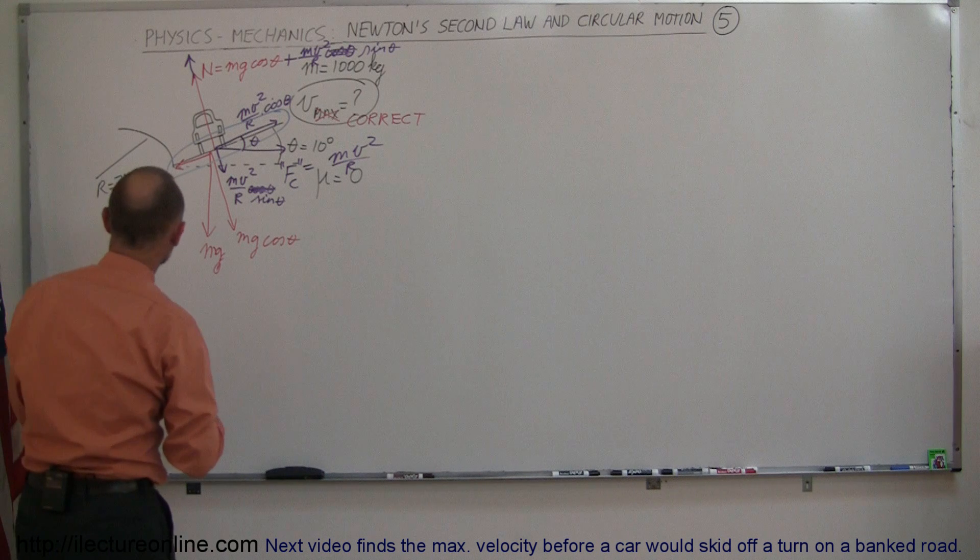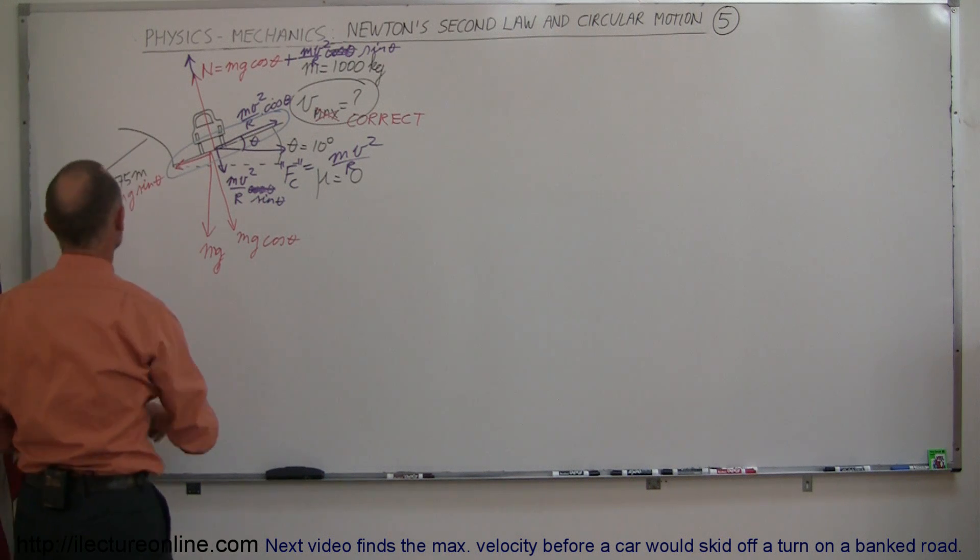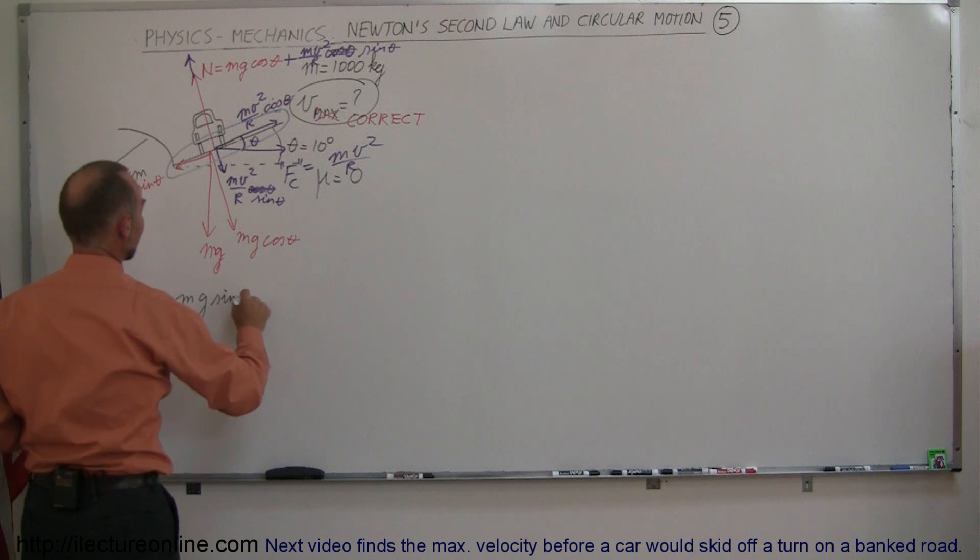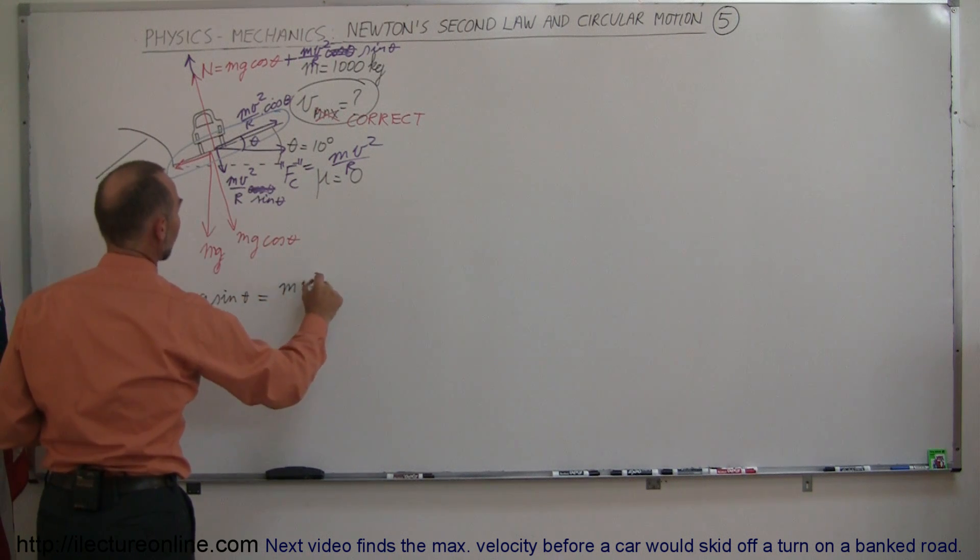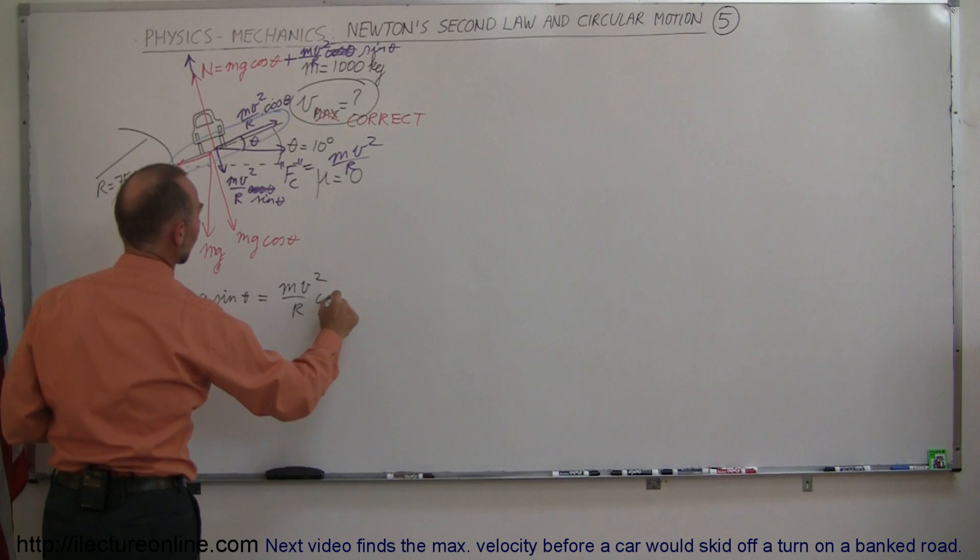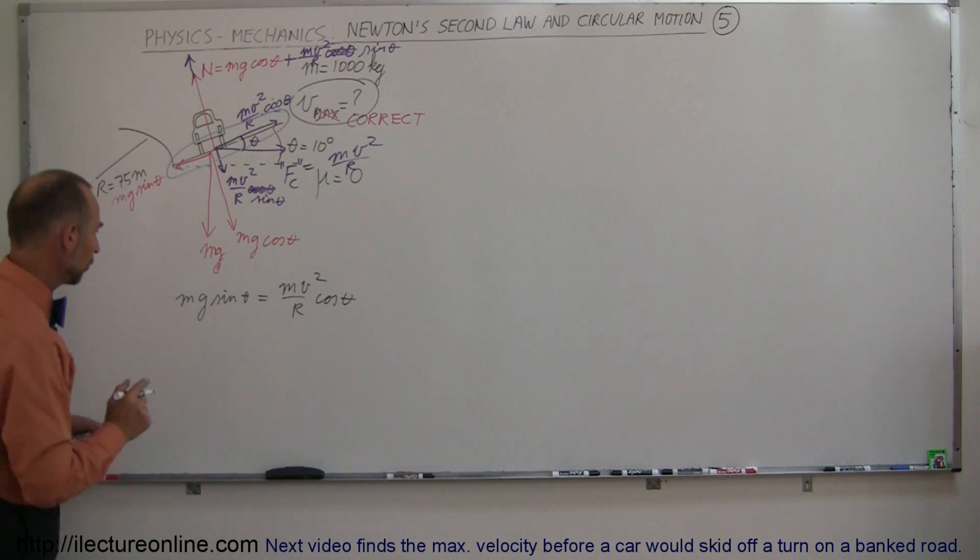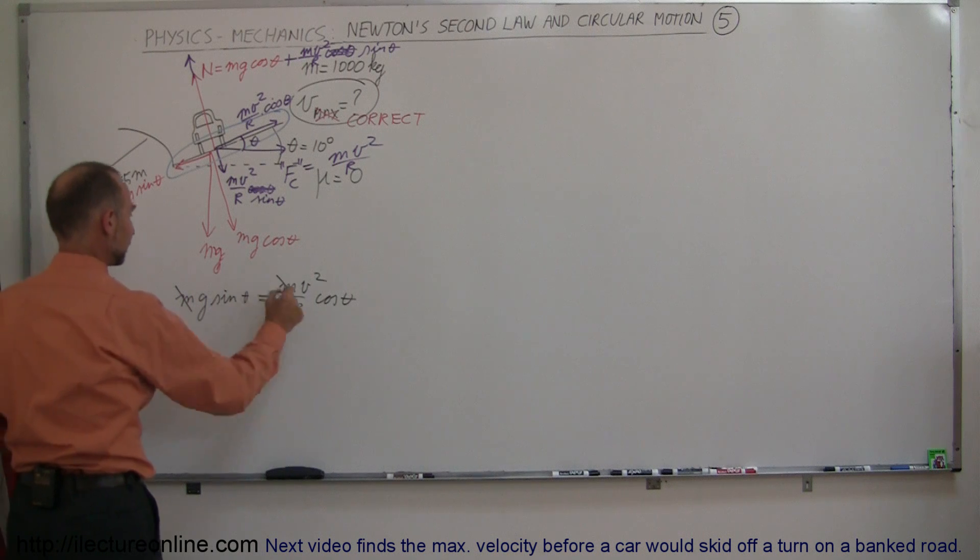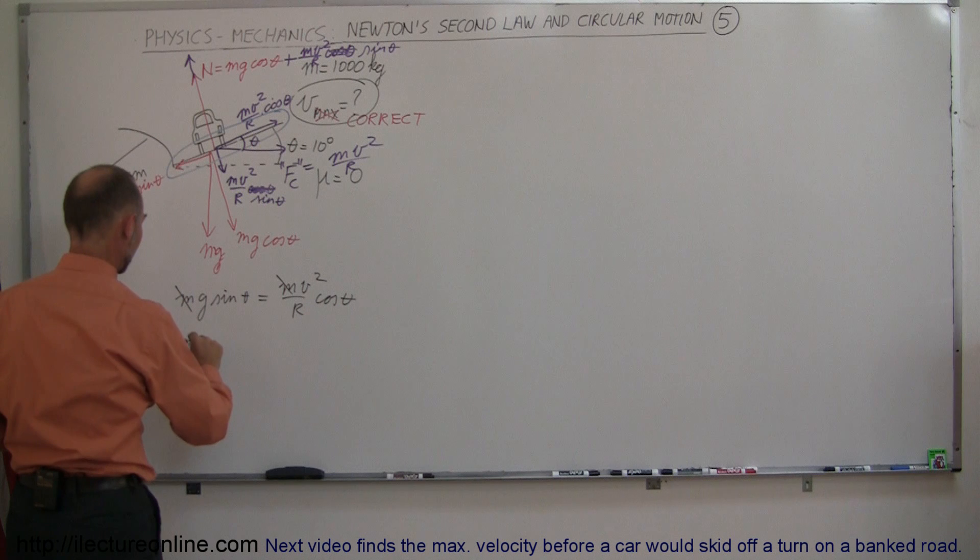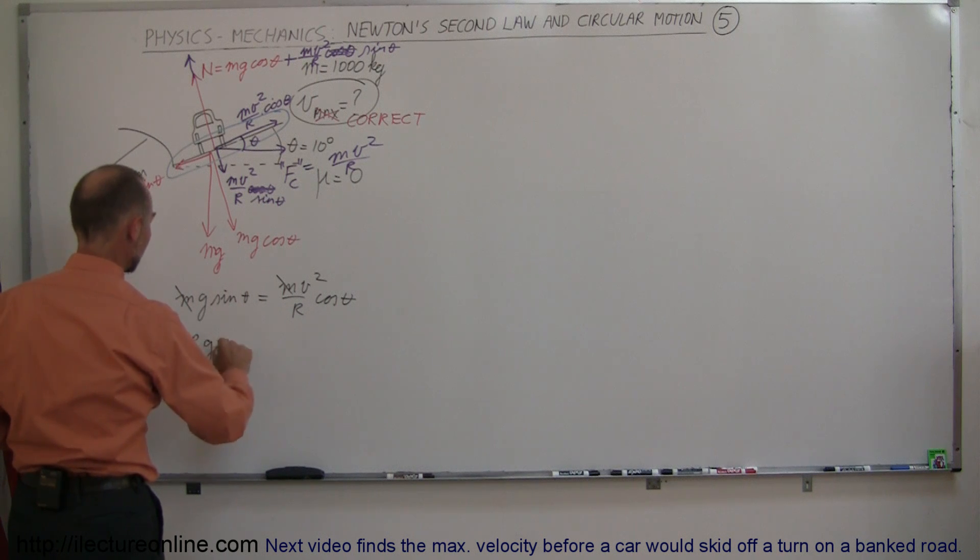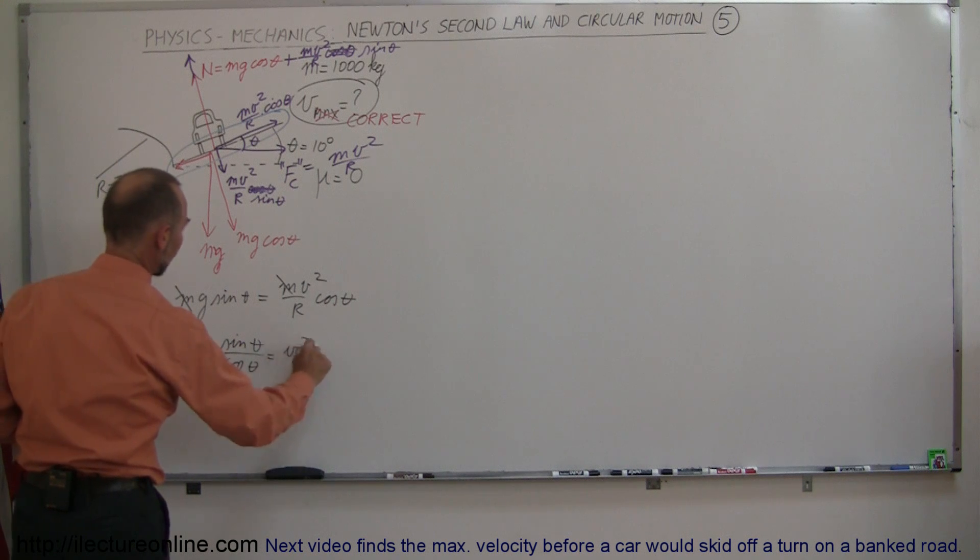So let's set those two forces equal to each other. So we're going to set the mg sine theta equal to the mv squared over R times the cosine of theta. And we're going to solve that for V. Now notice the mass cancels out. We can put the R over here and the cosine down here. So we have RG times the sine of theta divided by the cosine of theta is equal to V squared.